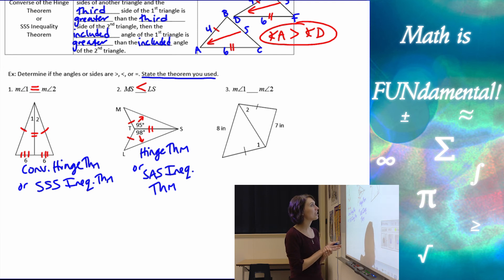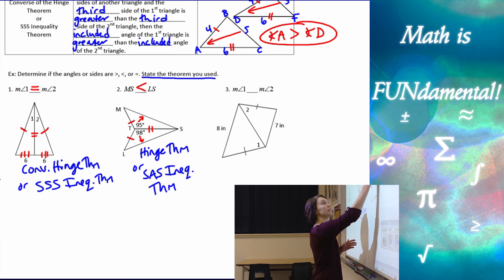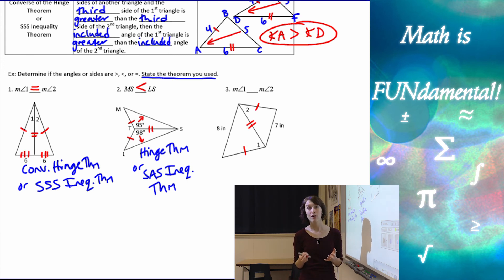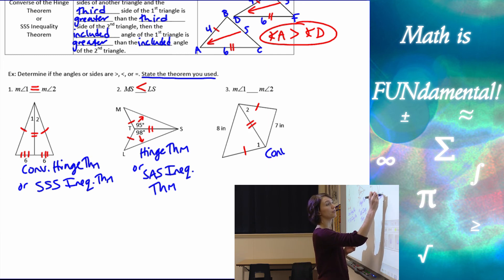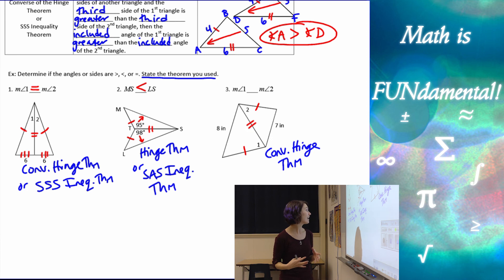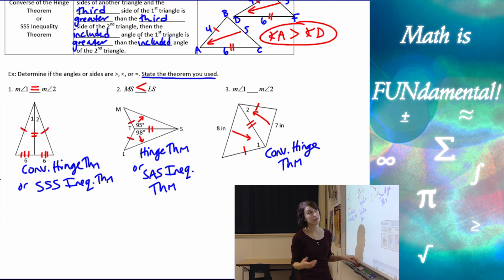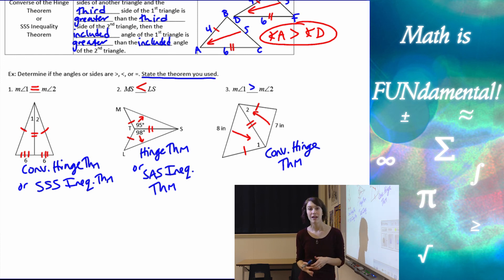In the last example, we're given one pair of congruent sides, a shared side that's congruent by reflexive property, and the length of the third side. Since we're given information about the sides, we'll use the converse of the hinge theorem, or the side-side-side inequality theorem. Eight inches is bigger than seven inches, so angle one across from eight inches must be greater than the measure of angle two.